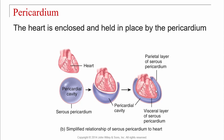Remember, an organ is a viscera. So the part of the membrane that touches the organ — in this case the heart — is going to be the visceral layer of the serous pericardium. The part that's out on the perimeter is the parietal layer of the serous pericardium. Think of 'perimeter' for parietal, and an organ is a viscera, so that touching the heart is the visceral layer.